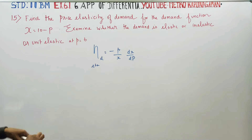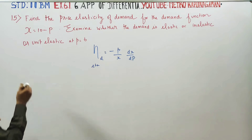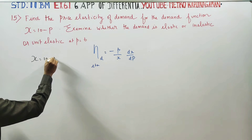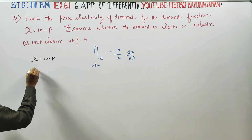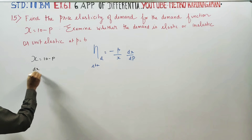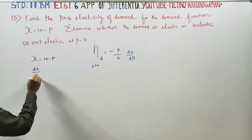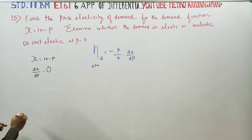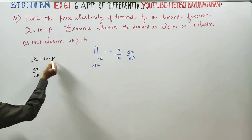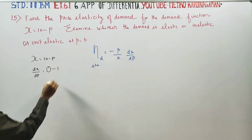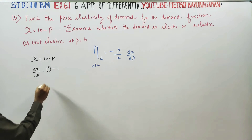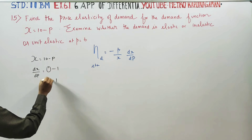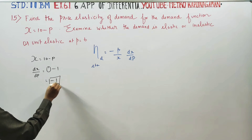For dx by dp, x is equal to 10 minus p. What is the differentiation? dx by dp: differentiate the constant 10 gives 0, differentiate p with respect to p gives 1. So the answer is minus 1. Keep minus 1.